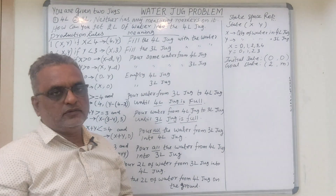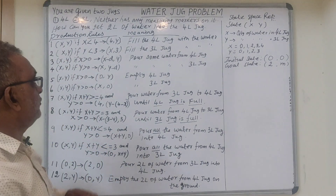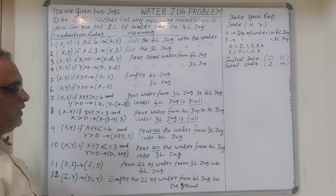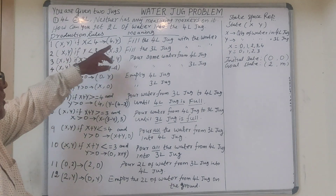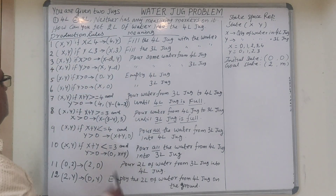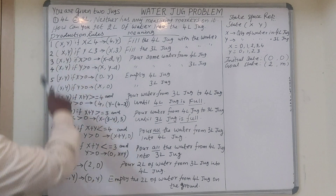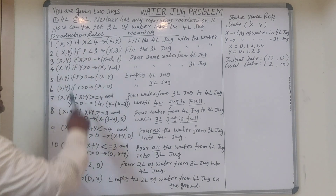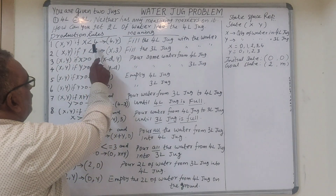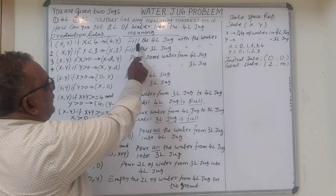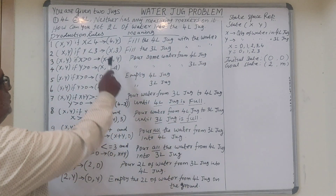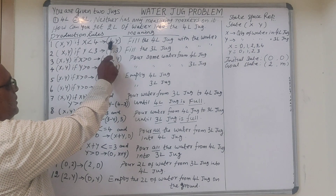The problem can be solved with the help of a set of production rules. We have totally 12 rules and their meanings are given. Here X represents the 4-litre jug and Y represents the 3-litre jug. Rule 1: X comma Y — if X is less than 4, it implies fill the 4-litre jug with water. So the result is 4 comma Y.